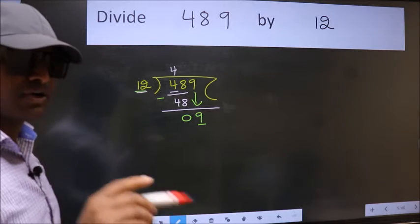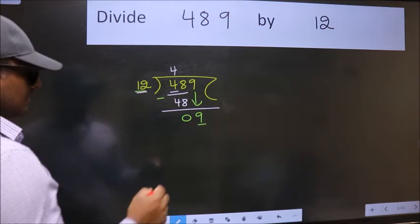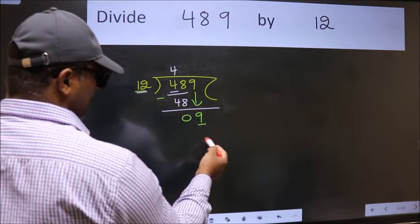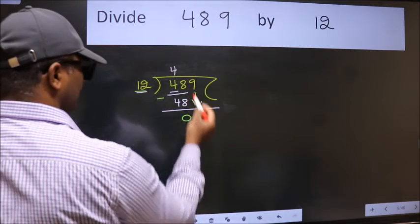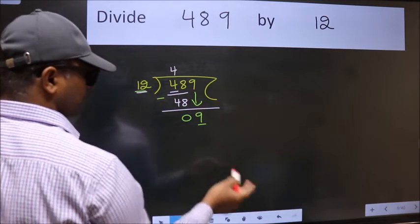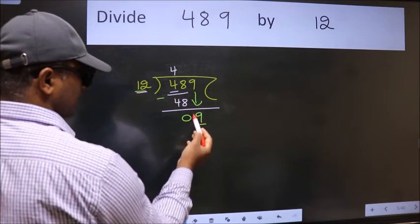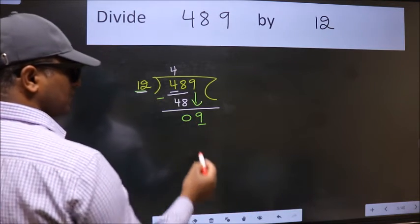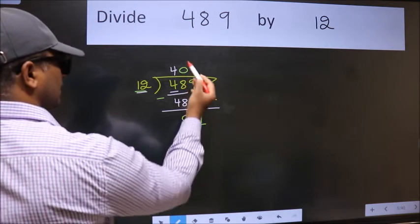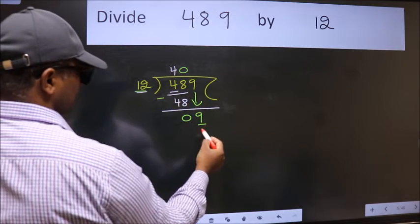Instead of that, what we should think is: which number should we take here? If I take 1, we will get 12, but 12 is larger than 9. So what we do is take 0 here. So, 12 into 0 is 0.